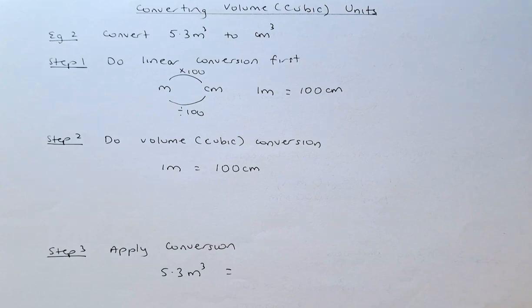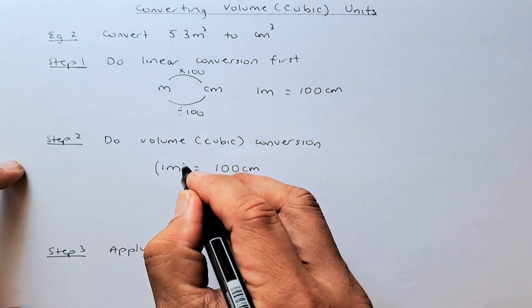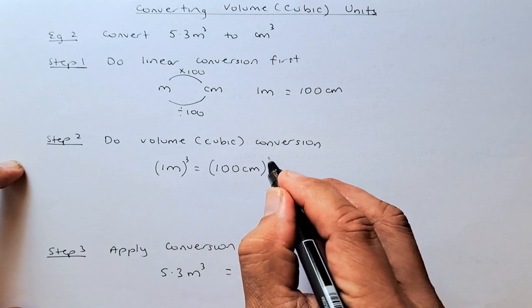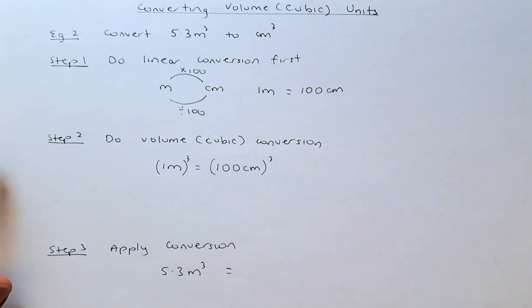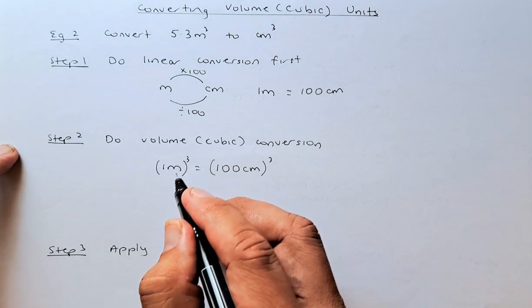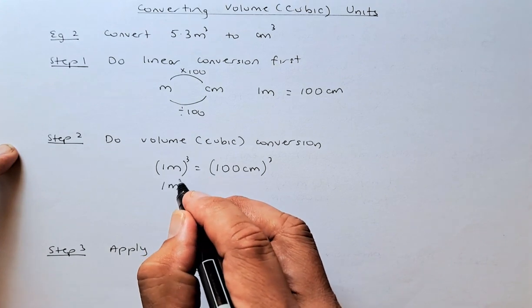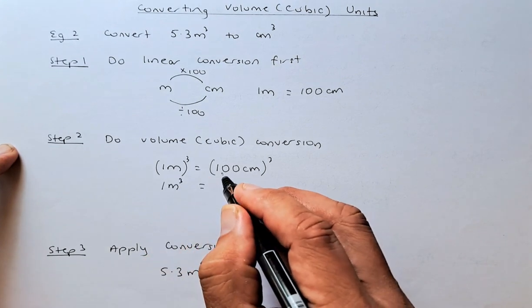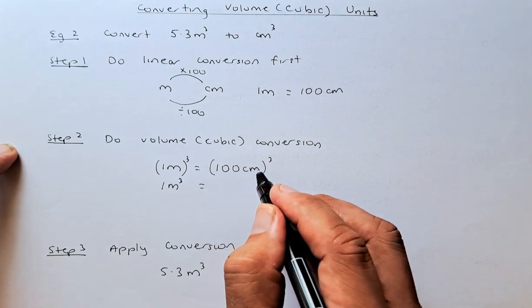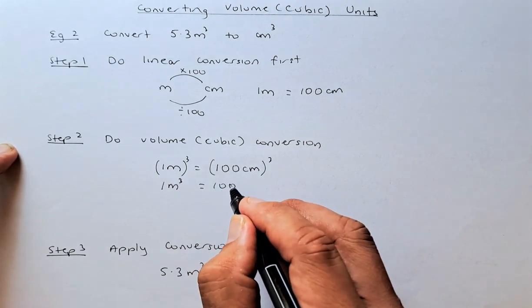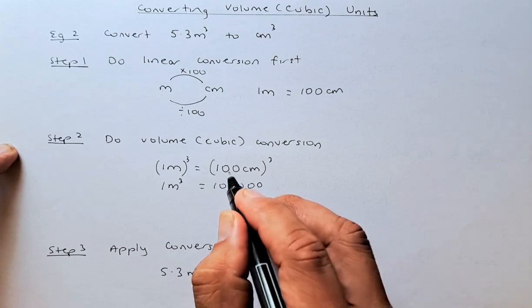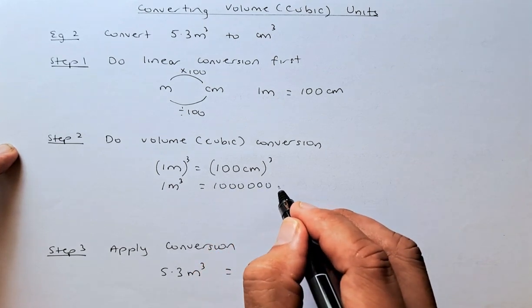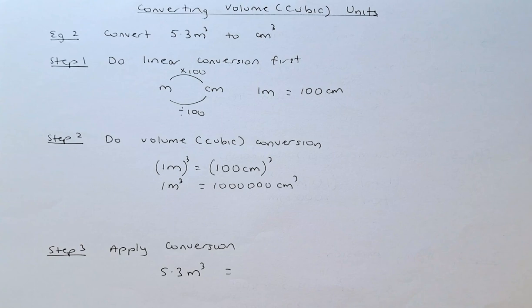The next step is to convert into cubic conversion, or volume conversion. To do that you need to cube both sides: cube 1 meter and then cube 100 centimeter. When you cube both sides, 1 meter cubed remains 1 meter cube, and on the right hand side 100 times 100 times 100 gives you 1 million centimeter cube. So 1 meter cube is equivalent to 1 million centimeter cube.